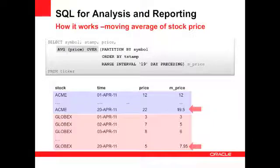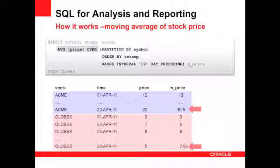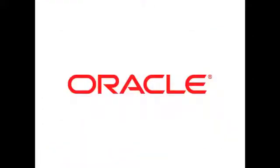Now the data is correctly grouped, correctly ordered, and we know what the interval for the range is — the current row plus 19 days preceding. So now we can actually compute the average. We can see that the last record in each partition shows the final moving average figure for that symbol, which for Acme is 19.5 and for Globex 7.95.